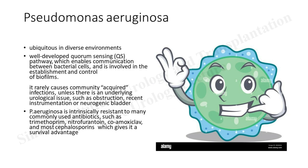Pseudomonas aeruginosa is ubiquitous — present in air, plants, soil, and water — because it has a quorum sensing pathway, a bacterial signaling system allowing bacteria to communicate and form very effective biofilms. This makes it resistant to most antibiotics and gives it a strong survival advantage.